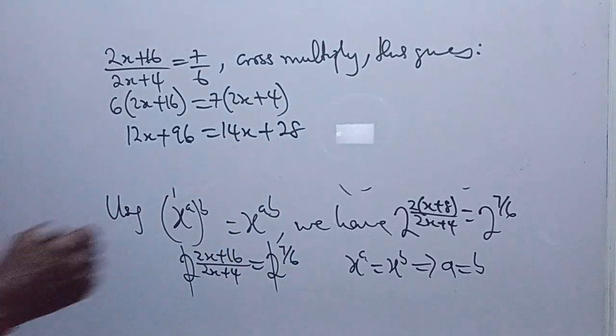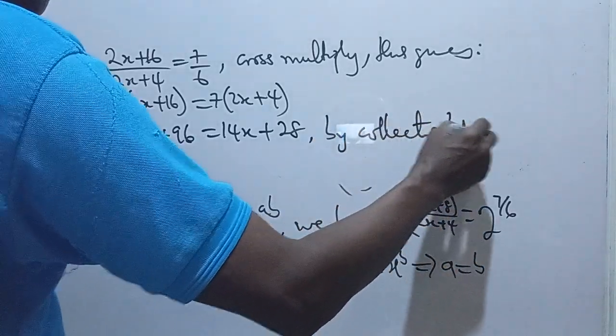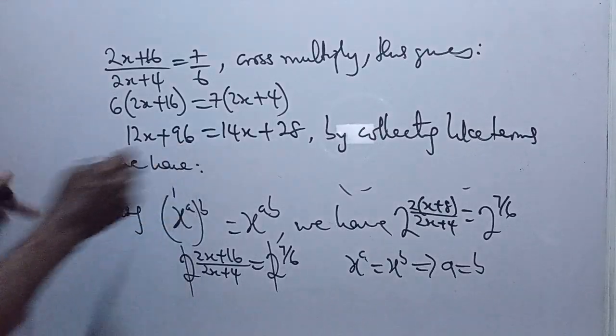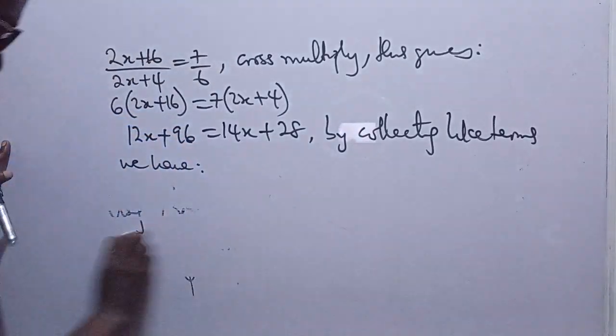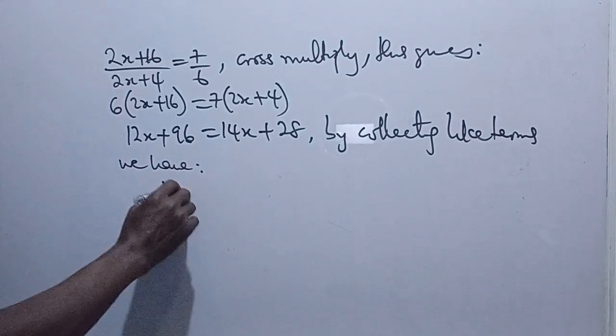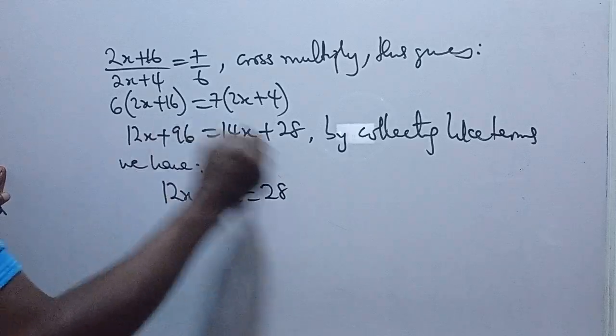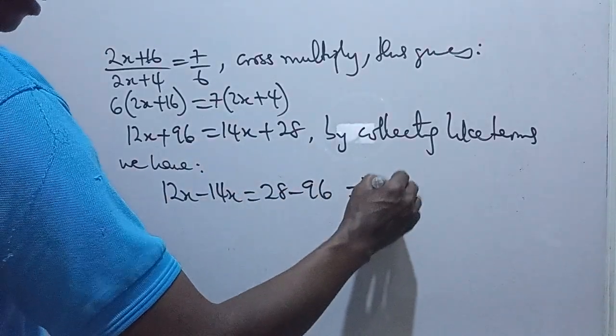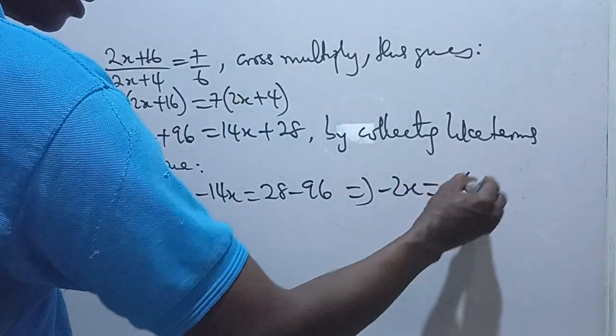Now we collect like terms. By collecting like terms, we have 12x minus 14x is equal to 28 minus 96, which gives minus 2x is equal to minus 68.